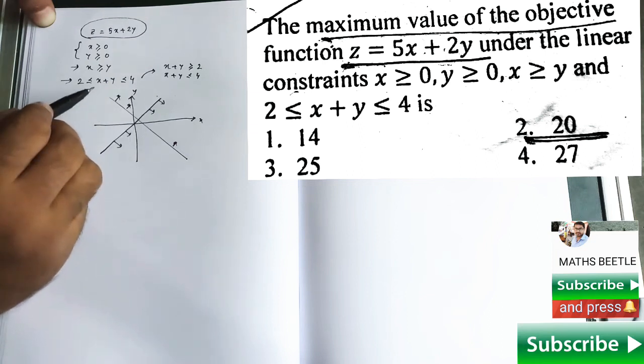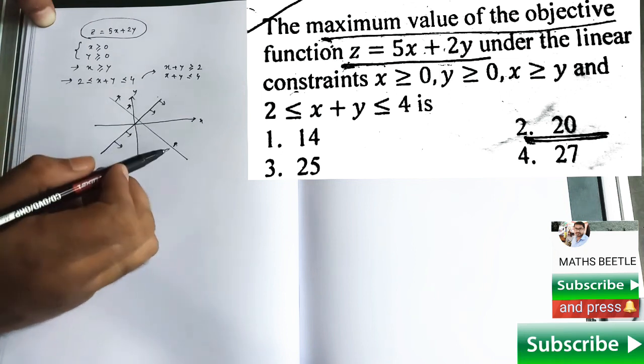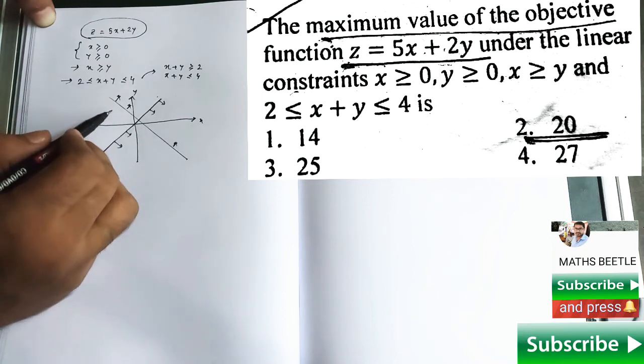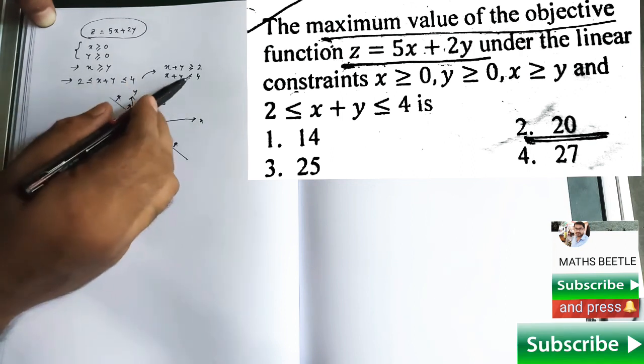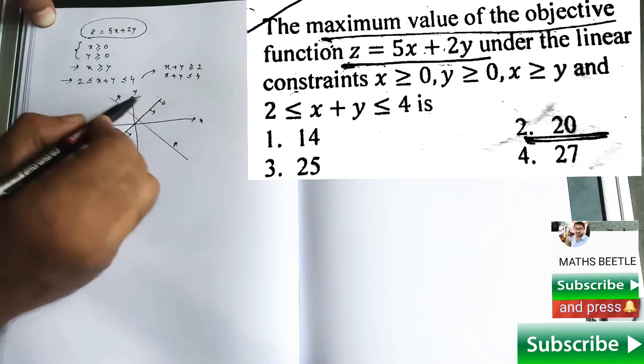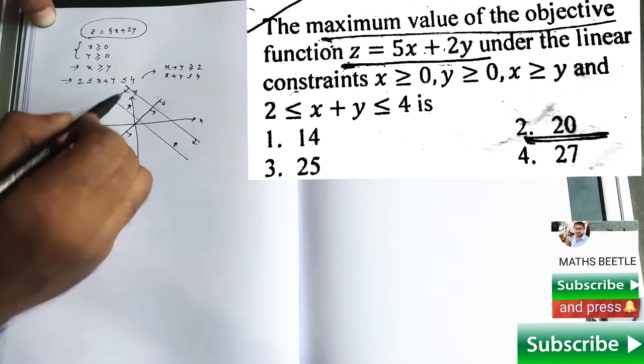And your job is to verify the direction or plot the corresponding inequalities. Just verify these things. And the fourth constraint, that means this constraint, will give you something like that.